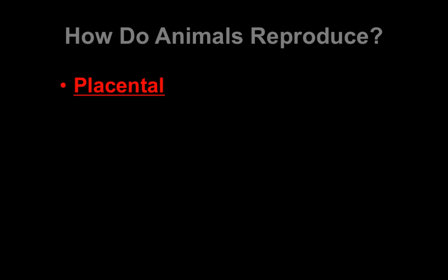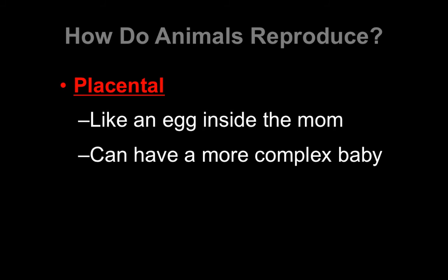Finally, we have the placental form of reproduction, which is what mammals do. It's kind of like having an egg inside the mom, because the placenta allows the mother to actually feed and provide life support to the baby while it develops. You can have a much more complex baby this way, because the baby can develop for a much longer time period. For example, a human baby takes nine months to develop — that's not something that would be possible with an egg — whereas a chicken takes about three weeks. So a human can be much more complex because the mother is continually providing support systems to the baby while it's developing.